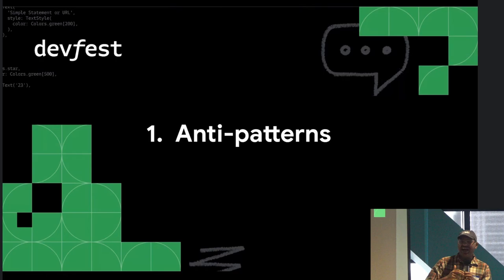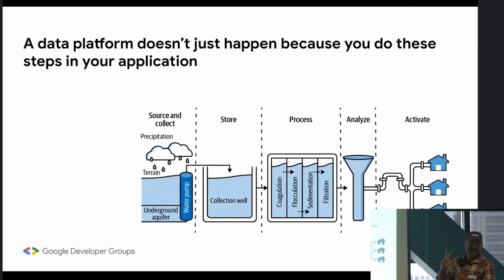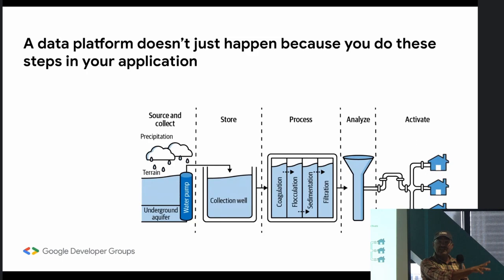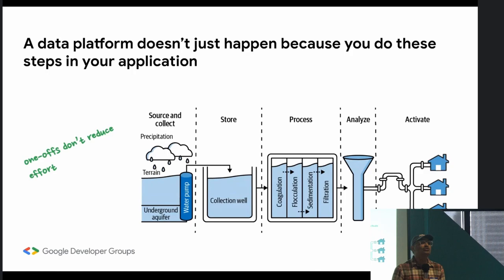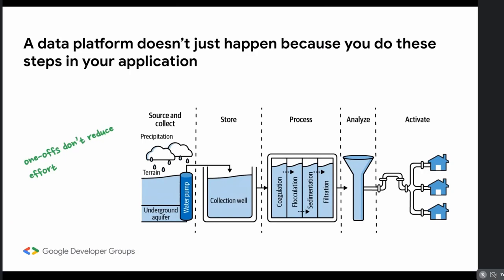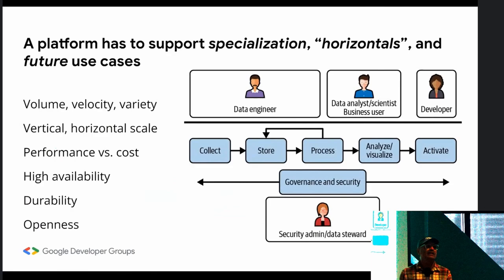I go into organizations and see these anti-patterns — things that are not a data and ML platform. The first anti-pattern is building every application with its own module for ingesting data, storing data on S3 or Google Cloud Storage or BigQuery, its own processing backend, analytics in Looker or Tableau, and activation via reverse ETL into Workday or Salesforce. People say, 'I have a data platform because I can do all of these things.' But just being able to do all these things doesn't mean you're reducing your effort, because you're doing them in a very one-off way — you don't have reuse.